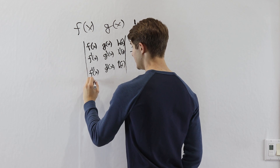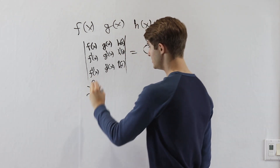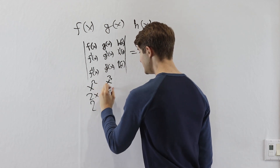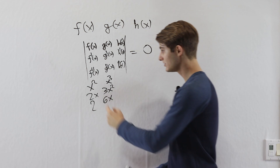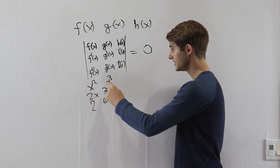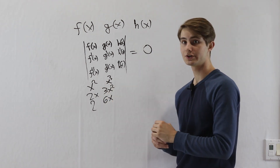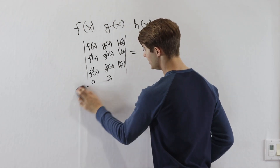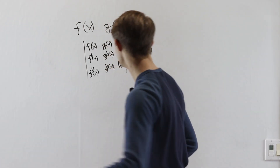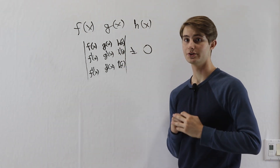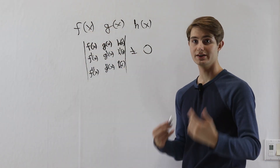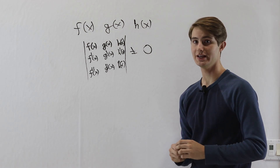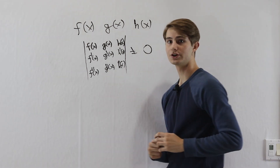For example, if f equals x squared, differentiating gives 2x, and differentiating again gives 2. On the other hand, if g equals x cubed, we get 3x squared and then 6x. So the columns (x², 2x, 2) and (x³, 3x², 6x) are distinct. We've solved the problem of columns being the same by using derivatives. If this Wronskian determinant is not equal to zero, the column vectors are not linearly dependent — they are linearly independent. So for functions f, g, and h, taking this determinant decides whether they are linearly independent.